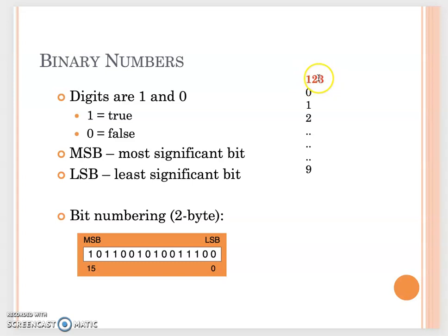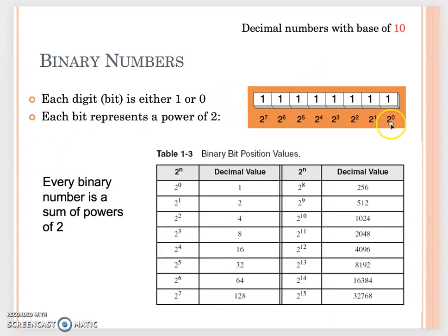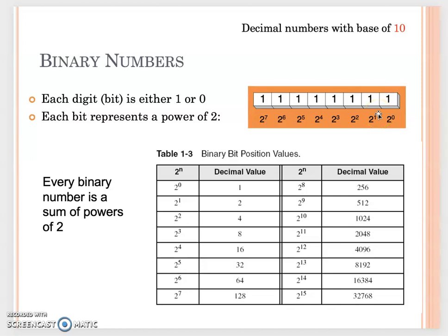For binary numbers, the base is 2. If I give you a 1-byte number where all the bits are 1, starting from the rightmost bit, the value is 2 to the 0th power. Going left, the exponent increments by 1. So 2 to the 0th power is 1, and 2 to the 7th power is 128. The leftmost bit represents 128 in decimal.